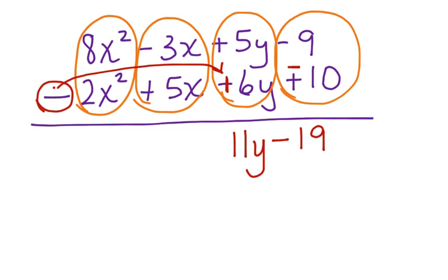Now, we have negative 3x minus 5x becomes a negative 8x. And we can put the plus here from the 5y and the 6y. And then we have 8x squared minus 2x squared, which is a 6 positive x squared.